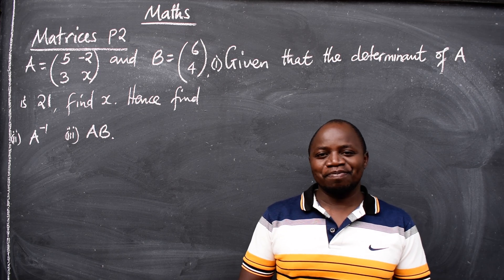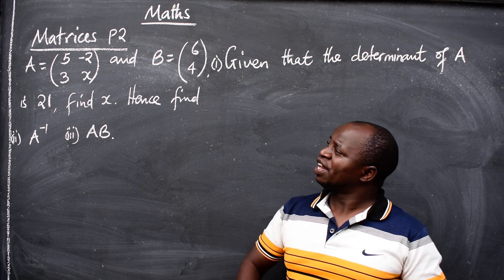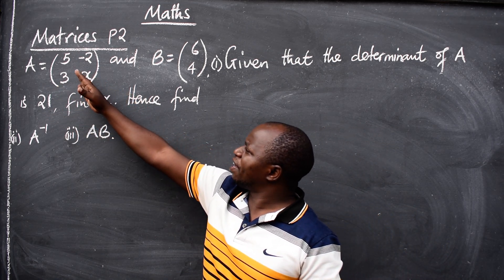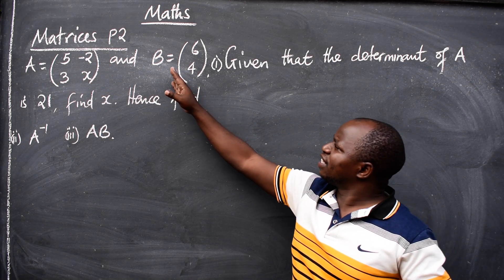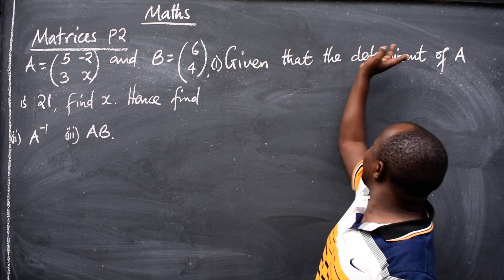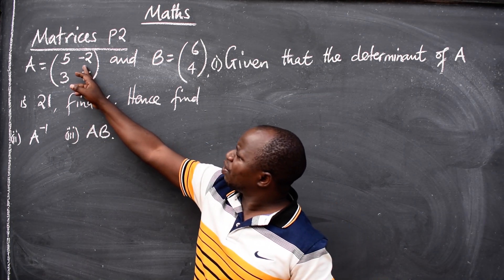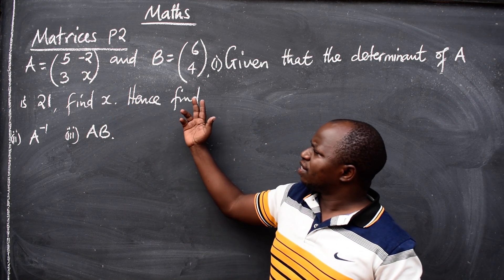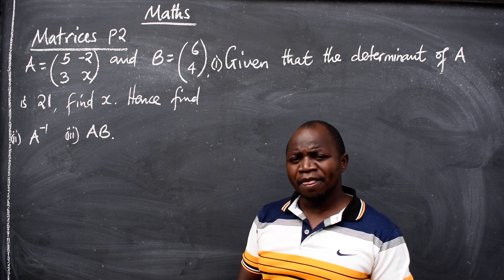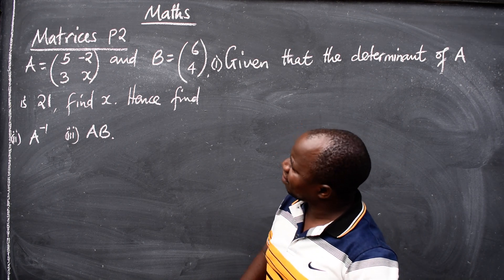Hello ladies and gentlemen, it's mathematics and we want to look at a matrix question, paper 2. The question says matrix A is equal to [[5, -2], [3, x]] and B is equal to [6, 4]. The first part says, given that the determinant of matrix A is 21, we have to find x. Hence, after finding the value of x, we should find the inverse of A and AB.